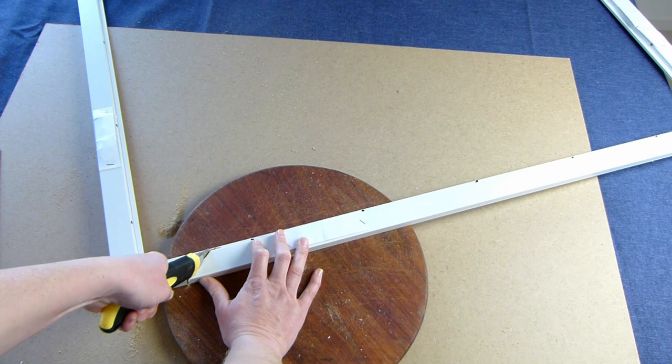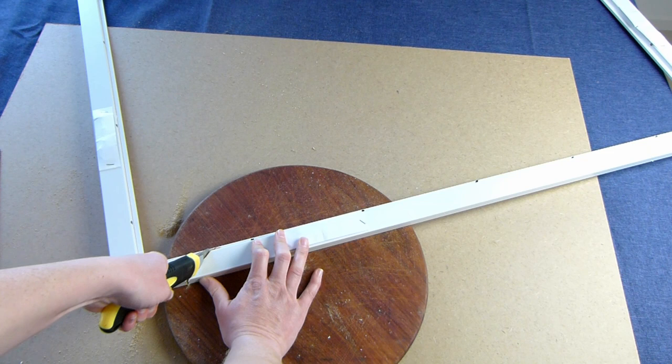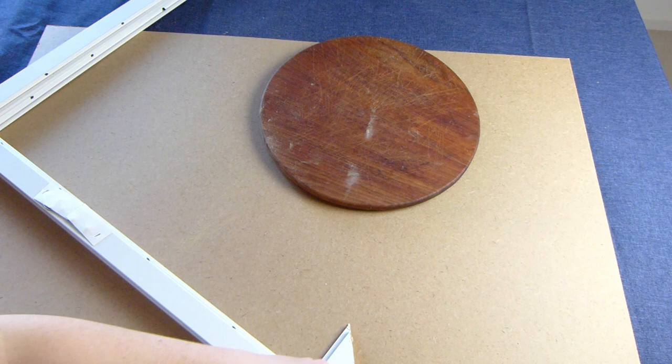Once you have half your frame cut to the right size you can use it as a template to cut the other side of the frame. Just make sure you double check the angle and the measurements.